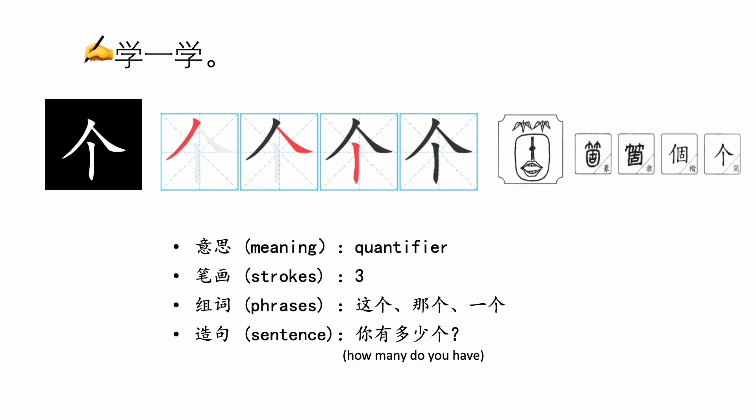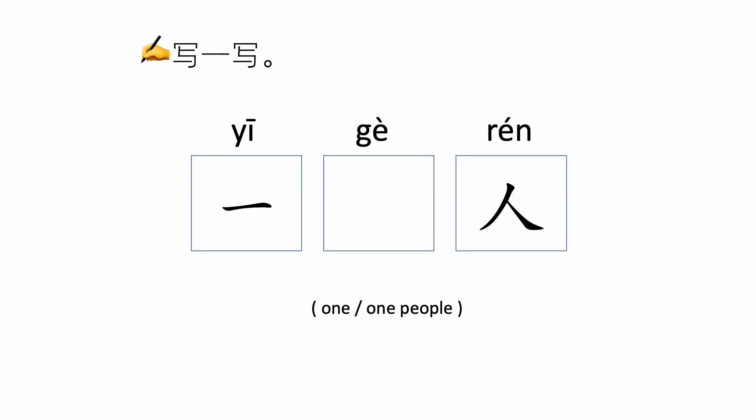个 can form the phrases 这个 (this), 哪个 (which), 一个 (one), and the sentence 你有多少个 (how many do you have?). Also 一个人, meaning one person. Can you write the 个 by yourself?